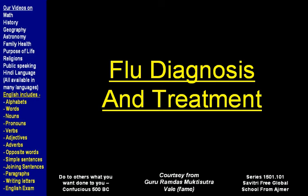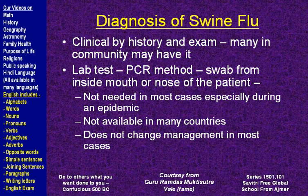Now let's see how flu is diagnosed and treated. During an epidemic, when many people have it, it's not difficult because it can be diagnosed by history — those symptoms we talked about earlier — and maybe a clinical exam by your doctor. Most cases during an epidemic do not need any testing. However, when the epidemic is beginning or the picture is not clear-cut flu, a test called the PCR method can be used, where a swab is taken from inside your mouth or nose.